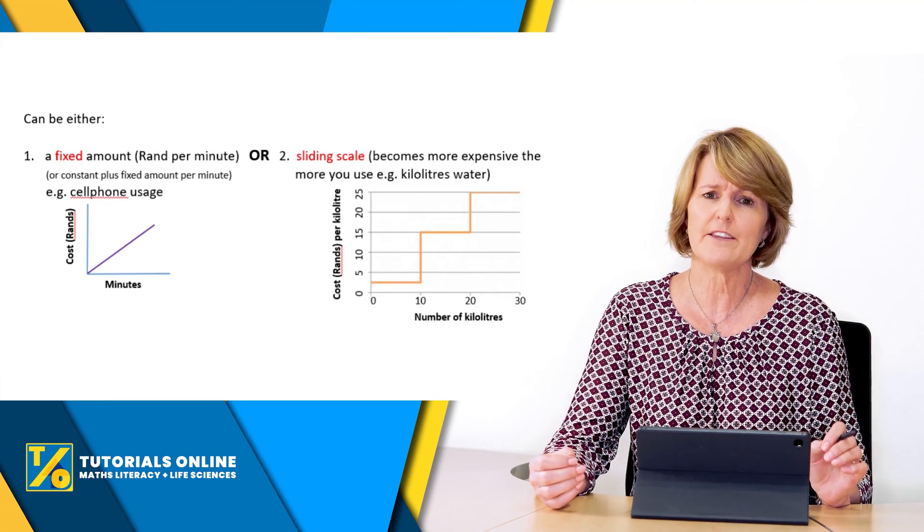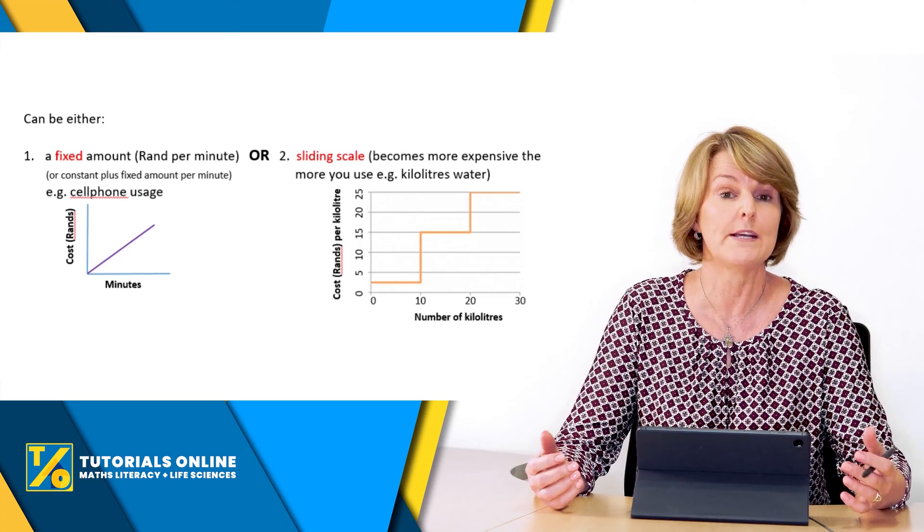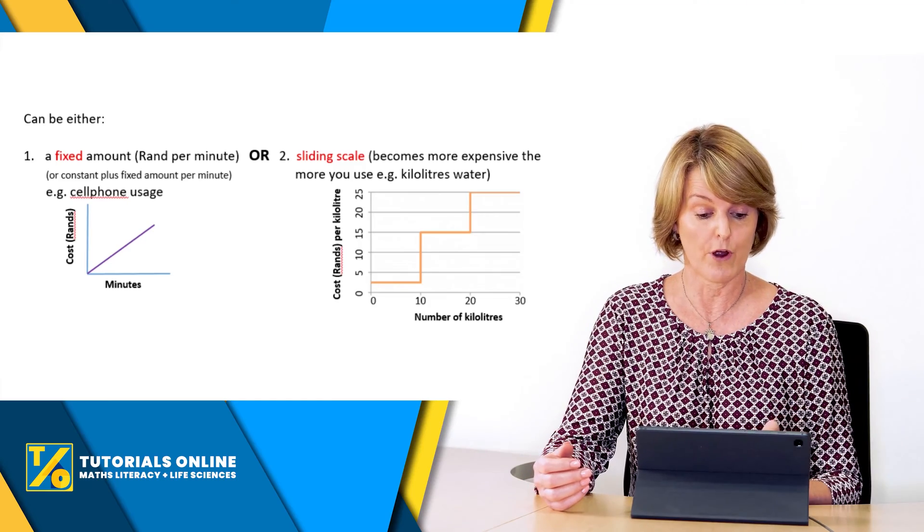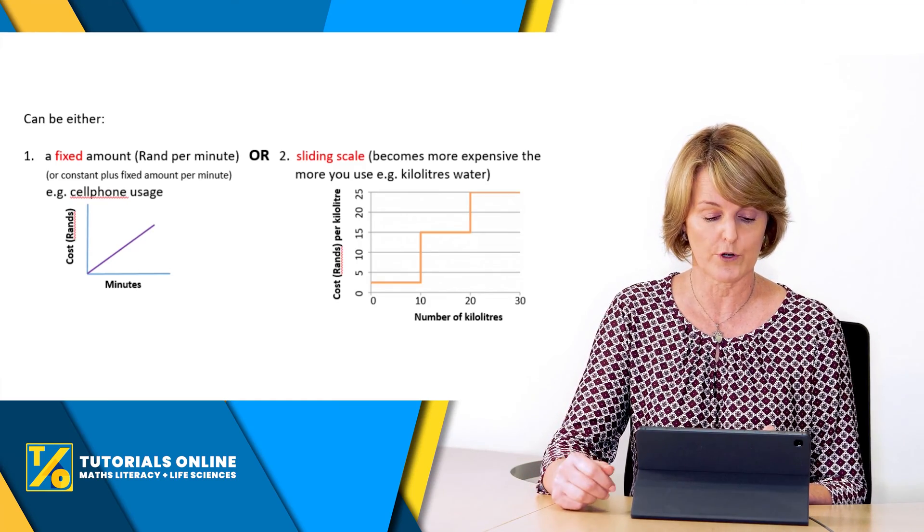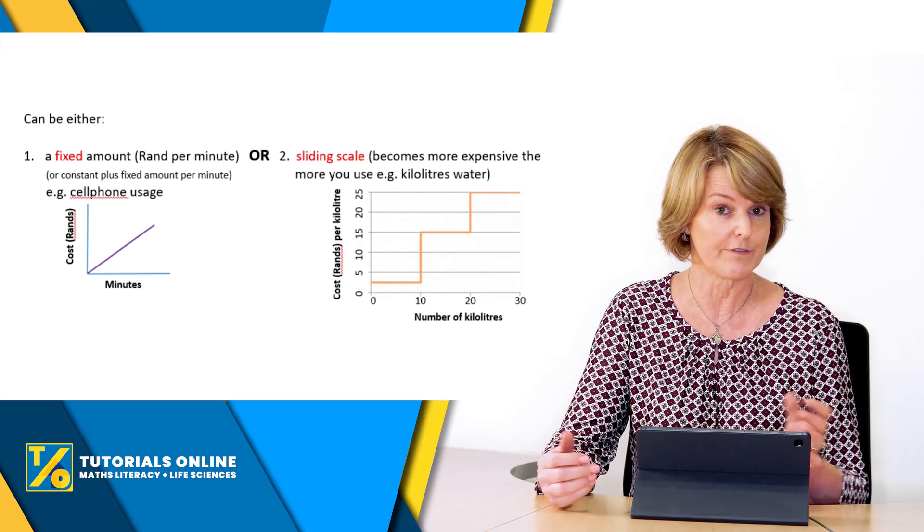It can either be a fixed amount, which is for example rand per minute, which would be your cell phone. If you've got a prepaid cell phone, then the graph would look something like this one where you've got cost in rands depending on the minutes that you speak on the phone.